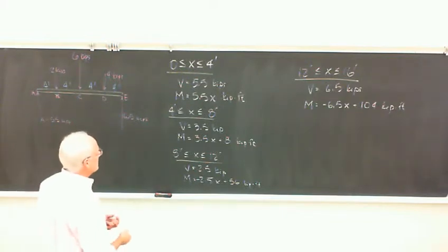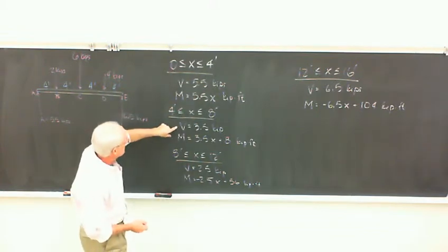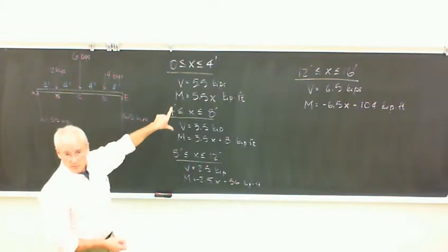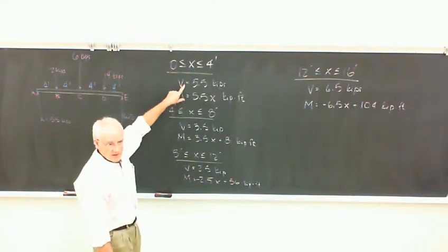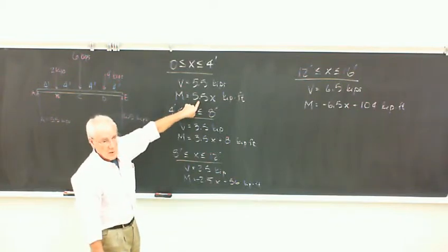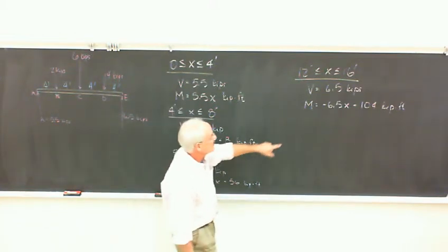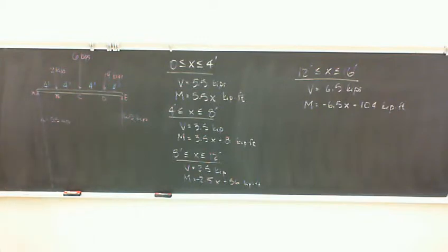It doesn't seem to work out perfectly - stuff is a function of x. Every time we went to a different section, we got a different shear and a different moment, so there's a dependence upon x. Clearly there is one with the moment because x is right in there, but shear depends upon where we are in the beam as well. There appears to be some relationship between the shear and the moment, because that number keeps reappearing. So what we can do now is actually graph these values and visually see what's going on.